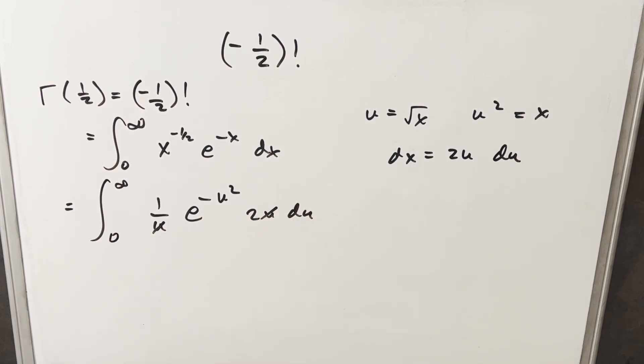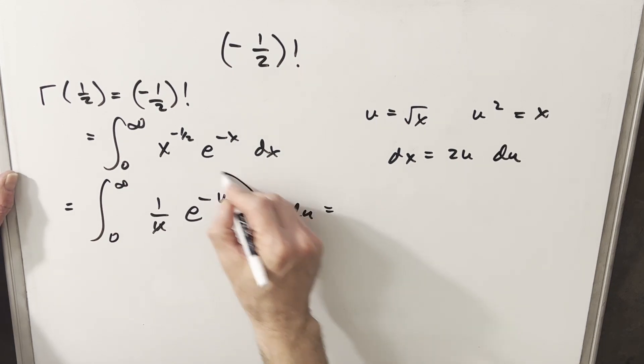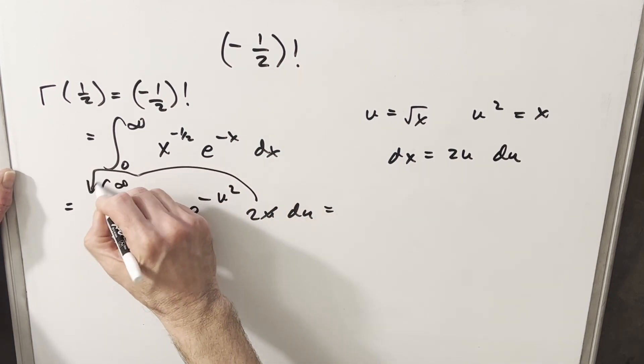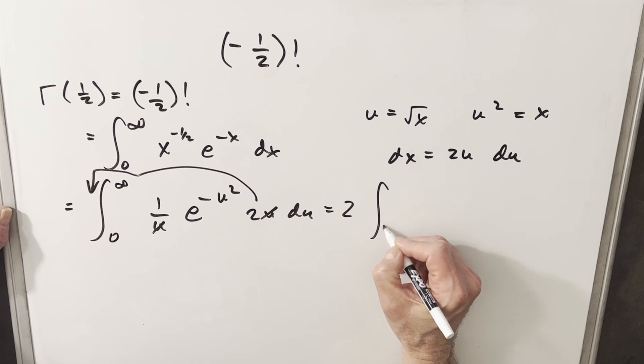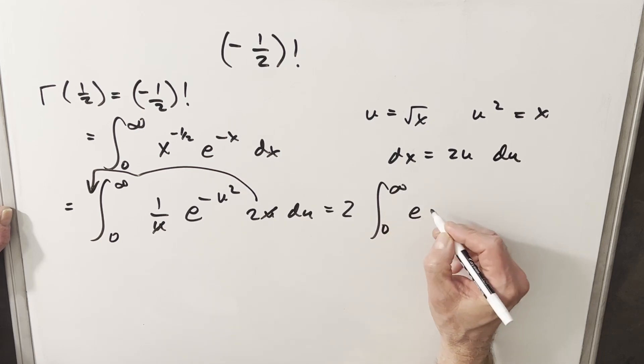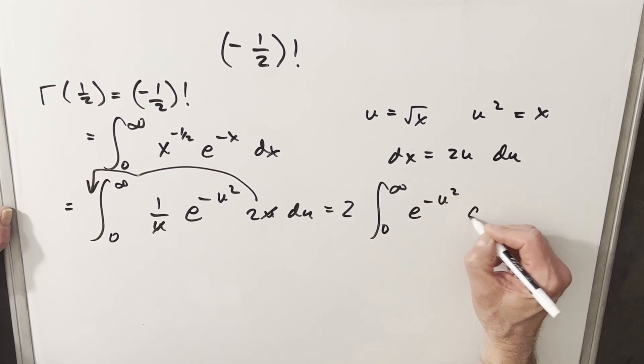U's are going to cancel here. Then we can rewrite this and bring our two out front there. So we're going to have two integral from zero to infinity, e minus u squared du.